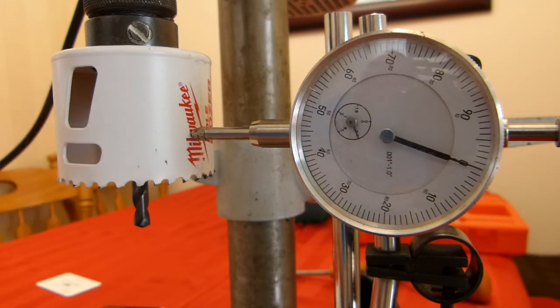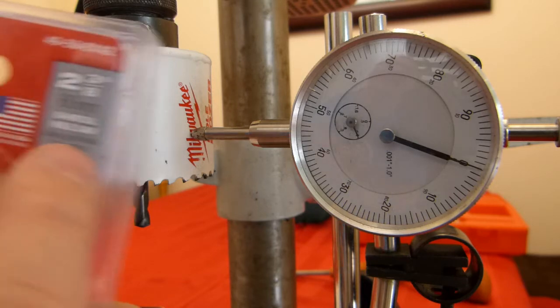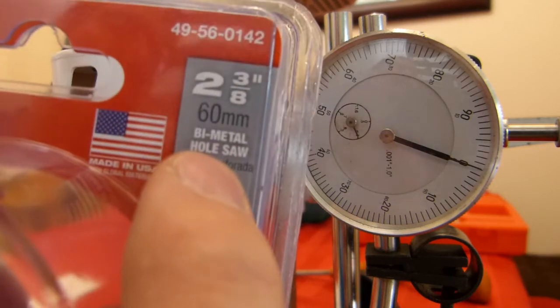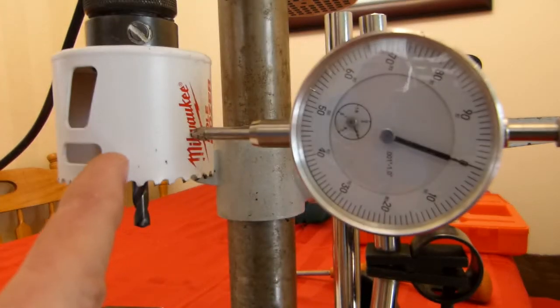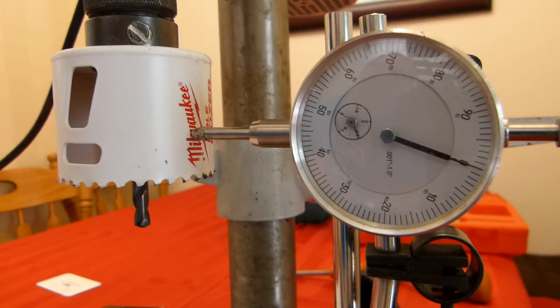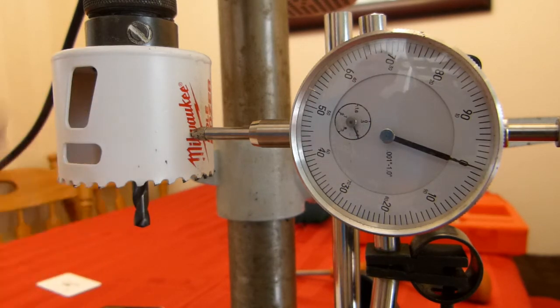A great deal of care went into making this bit. It's a bimetallic compound, it's not just made of mild steel. It says bimetal on the packaging. That means that besides steel they added another metal, in this case they claim to add 8% cobalt in it to make the steel harder, longer lasting.